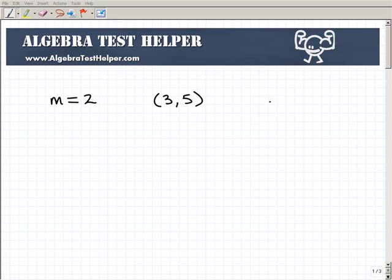And we'd like to write our equations in algebra using the point-slope formula. That's that y equals mx plus b. So if you're not familiar with that, you might want to jump over to our site, AlgebraTestHelper.com. We have a ton of information about lines and pretty much everything algebra.